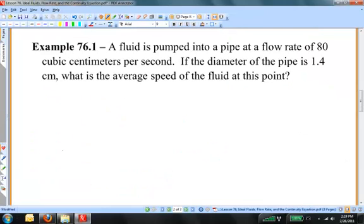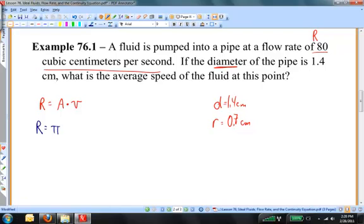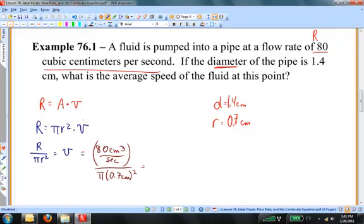Let's work a couple of examples. Example 76.1. A fluid is pumped into a pipe at a flow rate of 80 cubic centimeters per second. If the diameter of the pipe is 1.4 centimeters, what is the average speed of the fluid at this point? This flow rate of 80 cubic centimeters per second is R. And since R is equal to the area times the speed, then we can figure out what the speed is because we're told what the diameter is. The diameter of the pipe is 1.4 centimeters. The radius is half of the diameter, so that's going to be 0.7 centimeters. I could rewrite the flow rate, R is equal to pi r squared times v, because A is the area. So since I know what R is and I know what little r is, the flow rate and the radius, I can solve that equation for v. And now let's substitute some numbers and put them into our calculator. I find that the average speed of this fluid is 52 centimeters per second at this point.